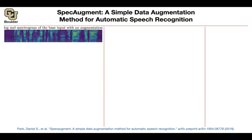We are going to take a look at our log-mel spectrogram — that's our data. This is without any augmentation, and we are going to do three types of data augmentation.